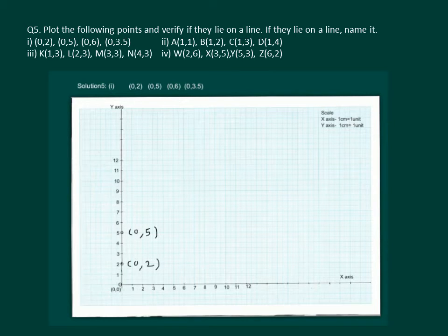Next is (0,6) that means 0 on the x-axis and 6 on the y-axis. And lastly we have (0,3.5) that means 0 on the x-axis and 3.5 on the y-axis. This is 3 and midway is 3.5. Now, if we join these points, we can see that they lie on a line and that line is actually y-axis. Hence, all these points lie on a line and that line is called y-axis.